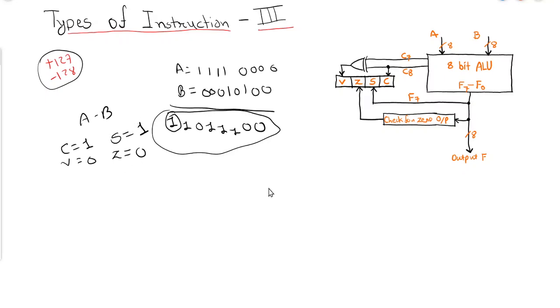So here compare instruction updates the status bits as shown. C will be 1 because there is a carry out of the last stage, and sign will be 1 because the most significant bit is 1.